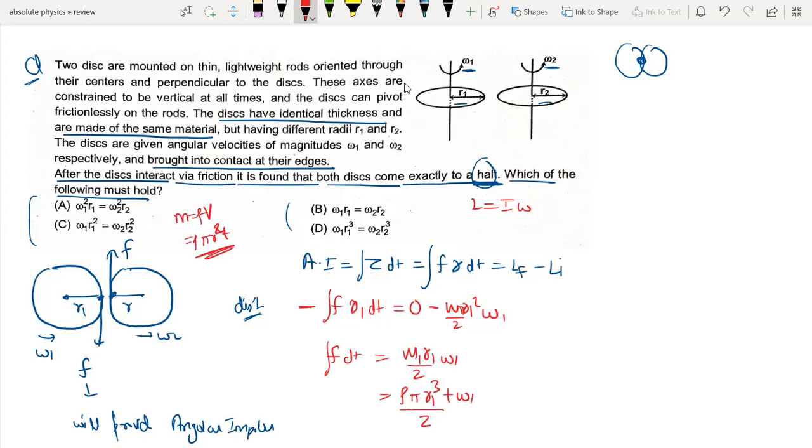Similarly, for disk 2, the friction force F dt equals m r2 squared by 2 times omega 2. The mass is density times volume, so F dt must equal rho times pi times r2 cubed times t times omega 2 by 2.